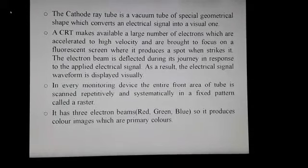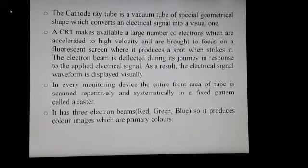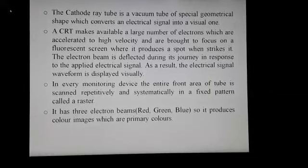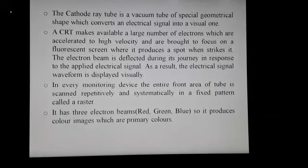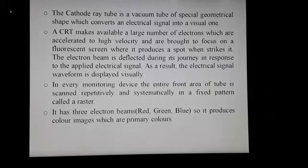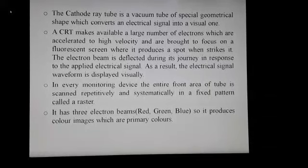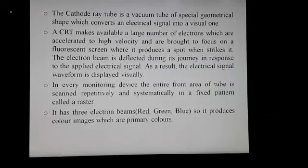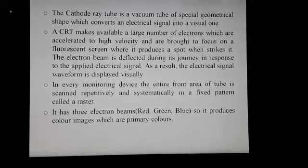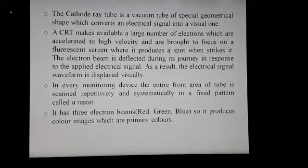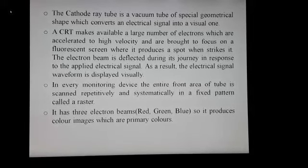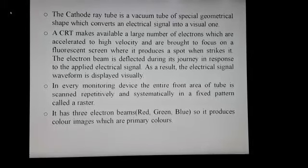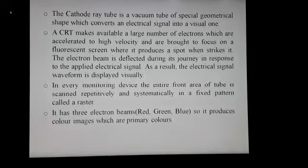In every monitoring device, the entire front area of the tube is scanned repeatedly and systematically in a fixed pattern called a raster. It has three electron beams — red, green, and blue — so it produces color images which are the primary colors.